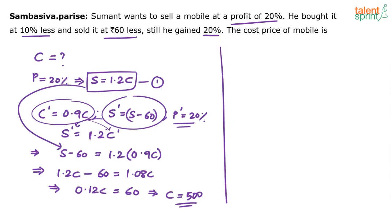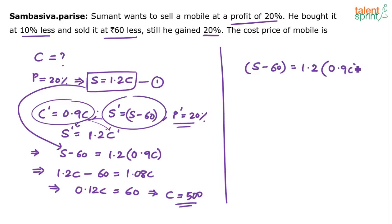In the exam you'll just write this directly: he still gained 20%, so selling price is 120% of cost price. The selling price is 60 rupees less than original — write S minus 60 equals 1.2 times cost price. Cost price is 10% less than original: 0.9C. Substitute S equals 1.2C. Two equations, two variables — solve and get the answer.